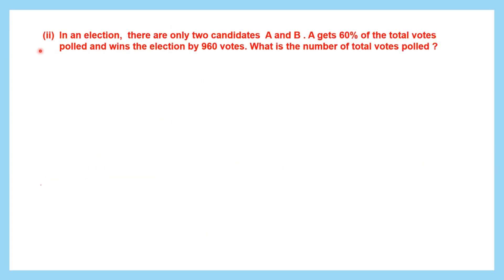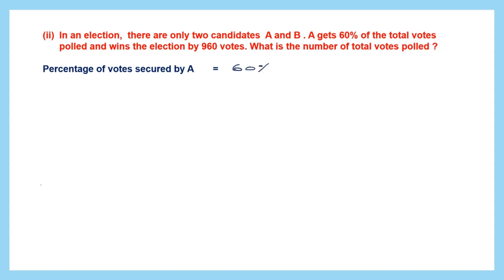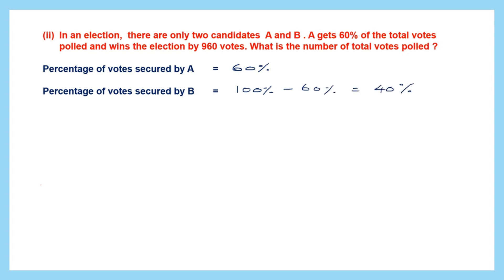Question 2. In an election, there are only two candidates, A and B. A gets 60% of the total votes polled and wins the election by 960 votes. The percentage of votes secured by A is 60%, so the percentage secured by B is 100% minus 60%, which is 40%. So A got 60% and B got 40% of the votes.